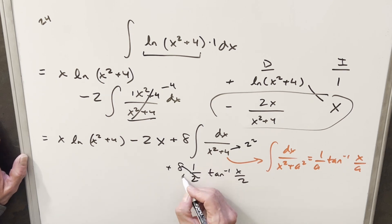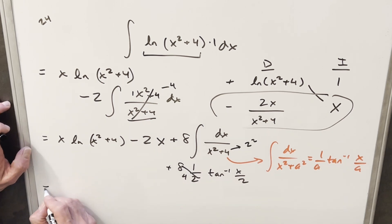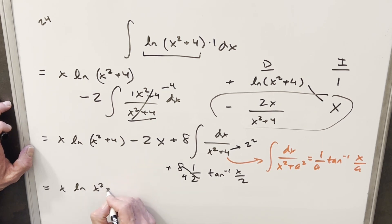But I can cancel 8 times 1 half. This is going to just give me a 4. And so then I just need to write out my final solution with all this stuff, copying it down.